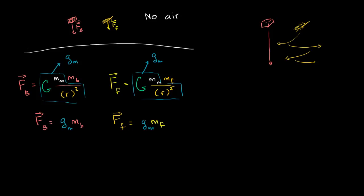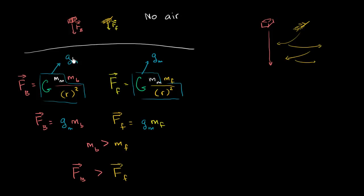Assuming the mass of the brick is greater than the mass of the feather, the force of gravity on the brick is greater than on the feather. You might say the brick will accelerate down more quickly — but remember, the brick also has greater mass. The larger something's mass, the less acceleration it experiences for a given force. What really determines how quickly each object falls is its acceleration.